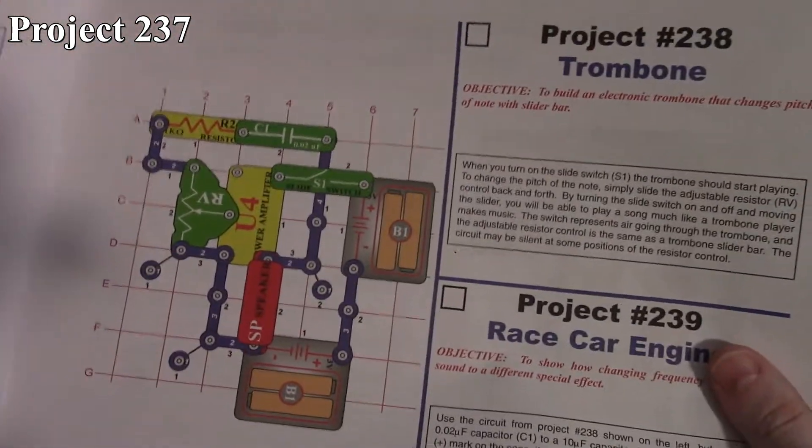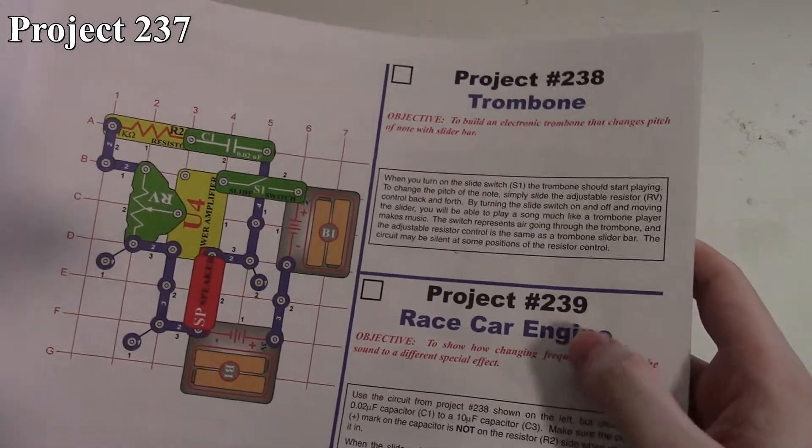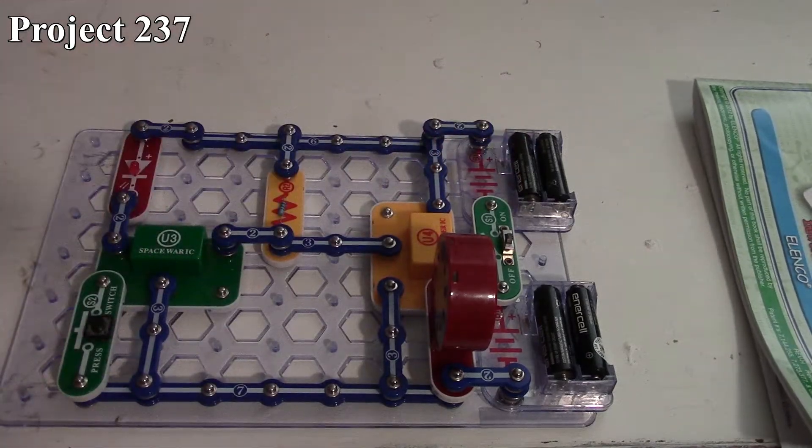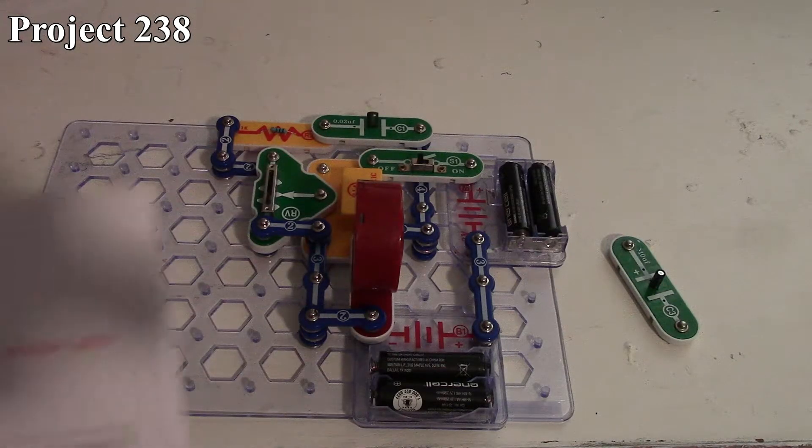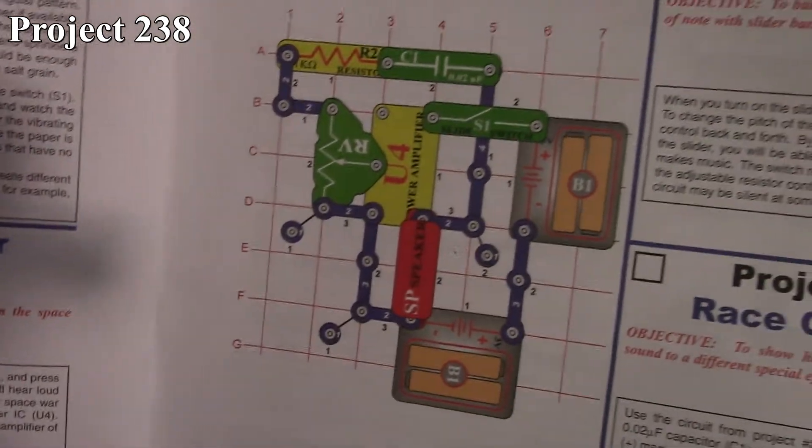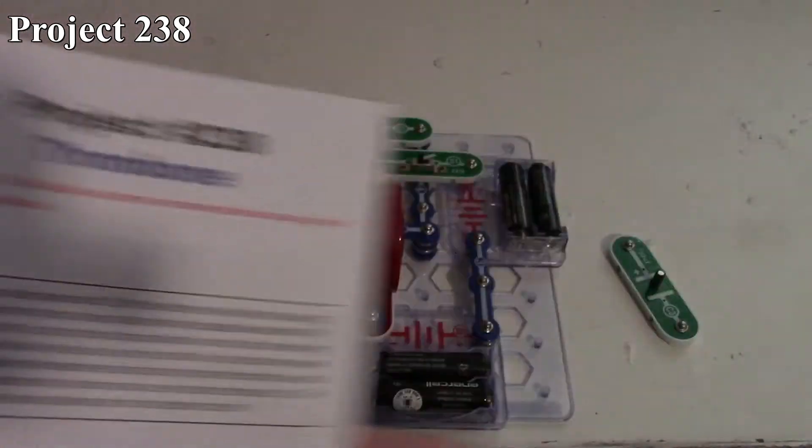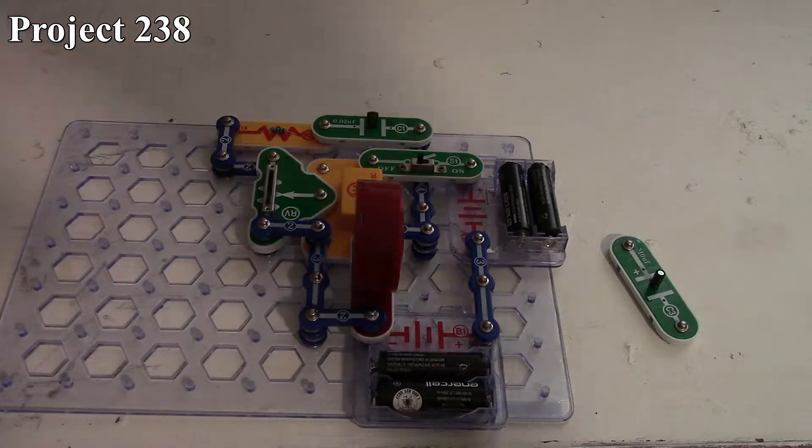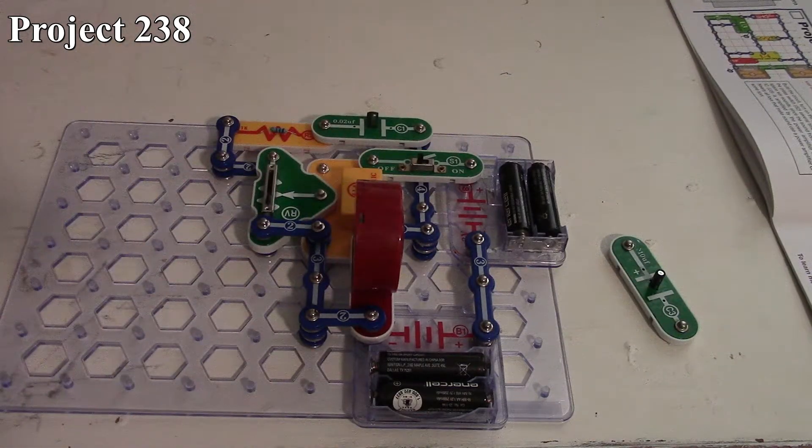That is the Space War amplifier, project 237. But now we're going to look at project 238 and 239 with that circuit there. So we're looking at project 238, which is the trombone. There's what our circuit looks like, and there it is on the board.